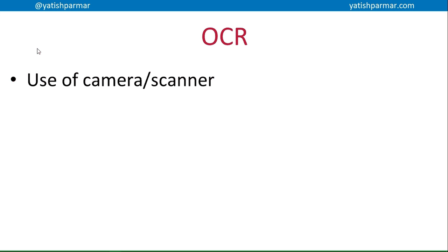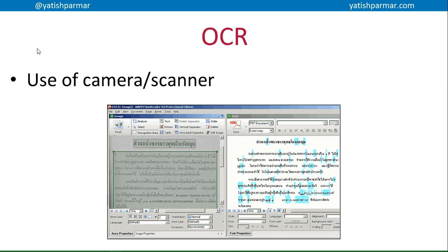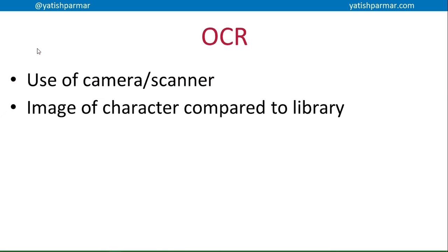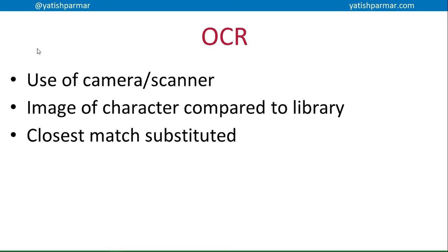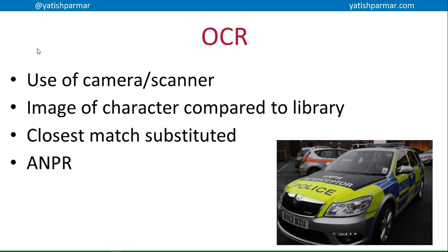Optical character recognition is basically where you use a camera or scanner. Here's an example of some Thai language software where on the left-hand side you can see the image from the scanner, and on the right-hand side you can see where characters have been recognized by the software and turned into a digital form on the computer that can then be edited. It can be turned into PDF documents, word processing documents, or text files. Essentially, you scan the image of the characters, compare them to a library of characters, and then the most appropriate match is substituted for the actual character in your document.